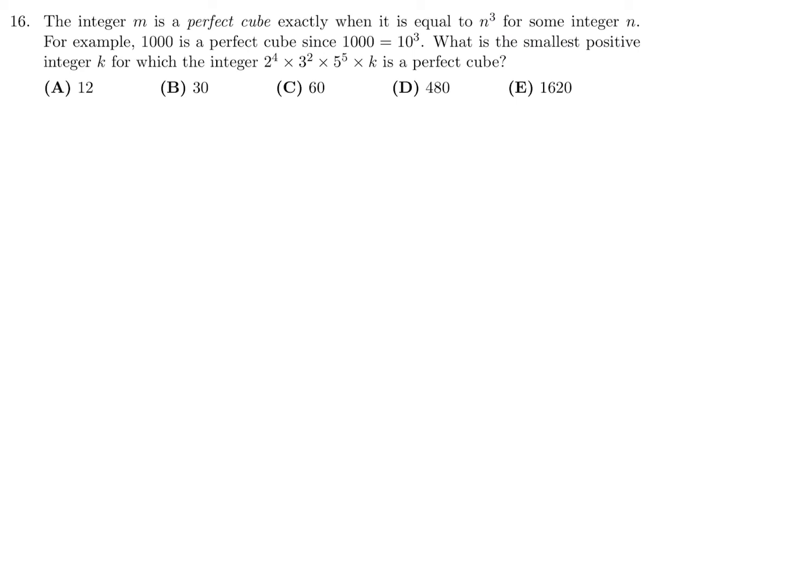An integer M is a perfect cube exactly when it is equal to n to the power of 3 for some integer n. For example, 1000 is a perfect cube since 1000 equals 10 to the power of 3. What is the smallest positive integer k for which the integer 2 to the power of 4 times 3 to the power of 2 times 5 to the power of 5 times k is a perfect cube?